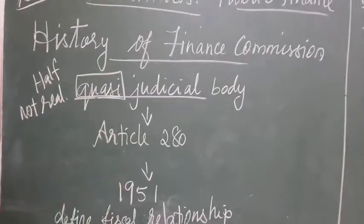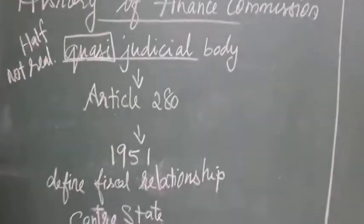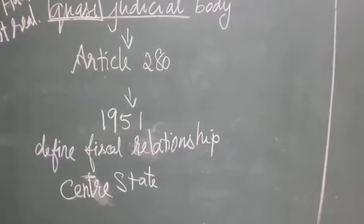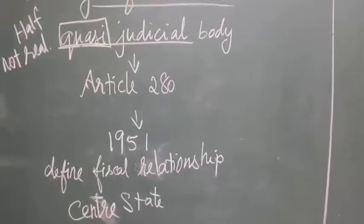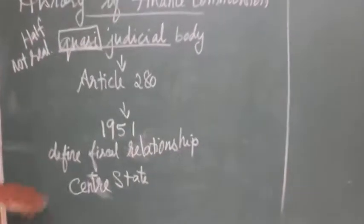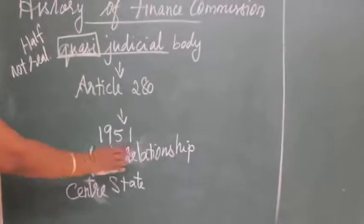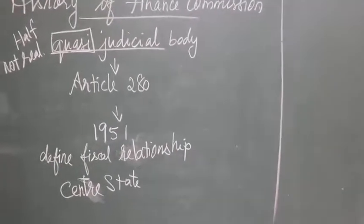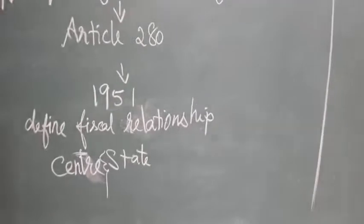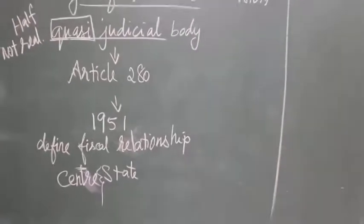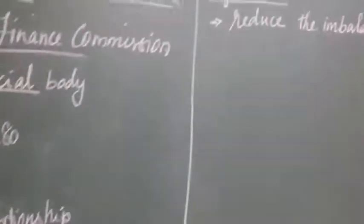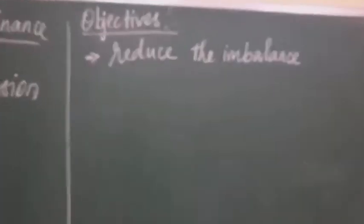The Finance Commission was set up under Article 280 in the year 1951. It was established to define the financial relationship between the centre and the states, and was set up on the basis of these aims.